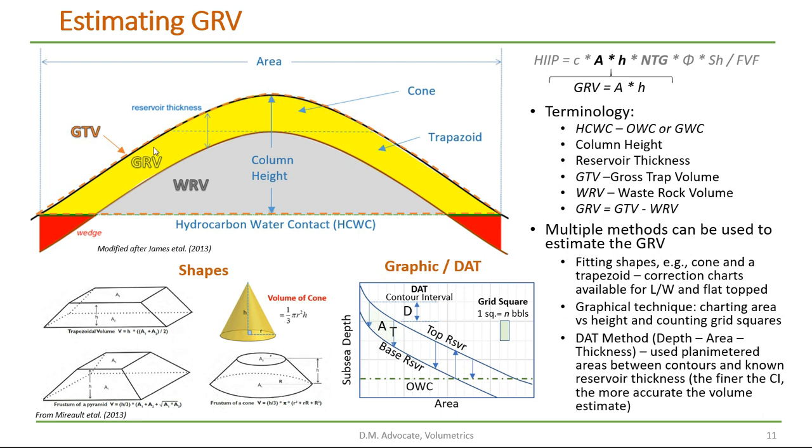The area defined by the trap and the oil water contact in this cross section is the gross trap volume. And the area that is roughly cone-shaped here that is below the base of the reservoir is the waste rock volume.